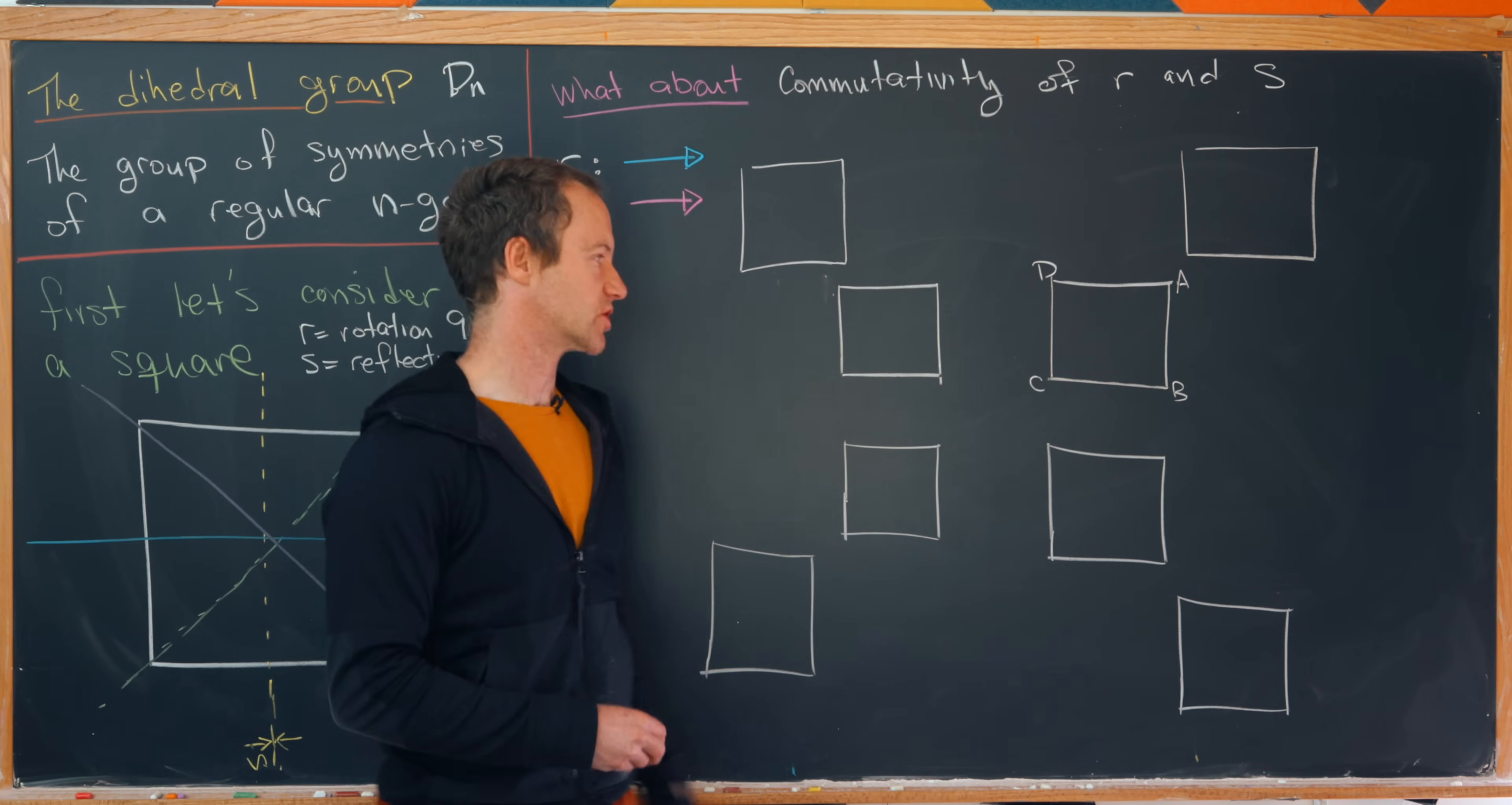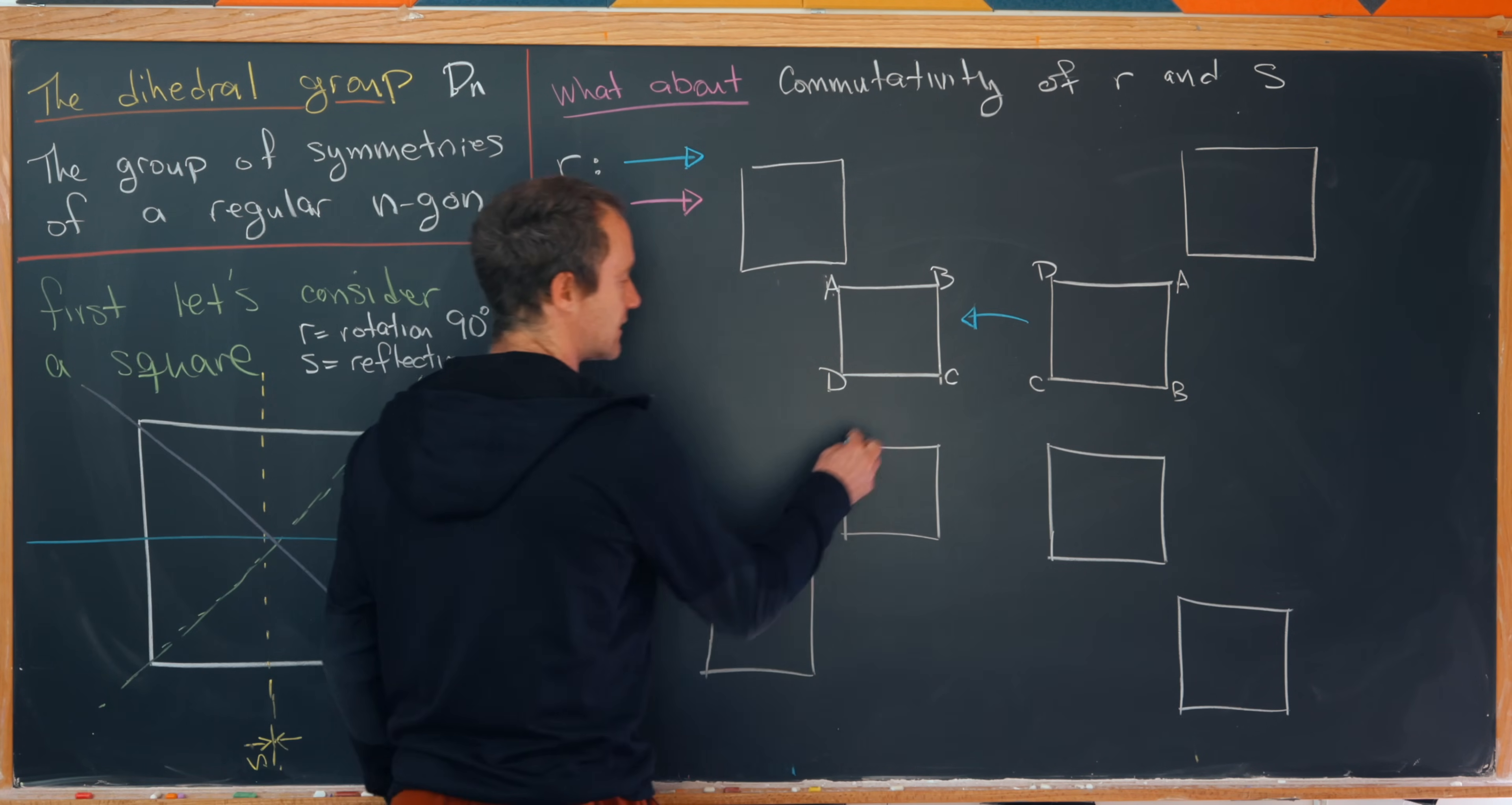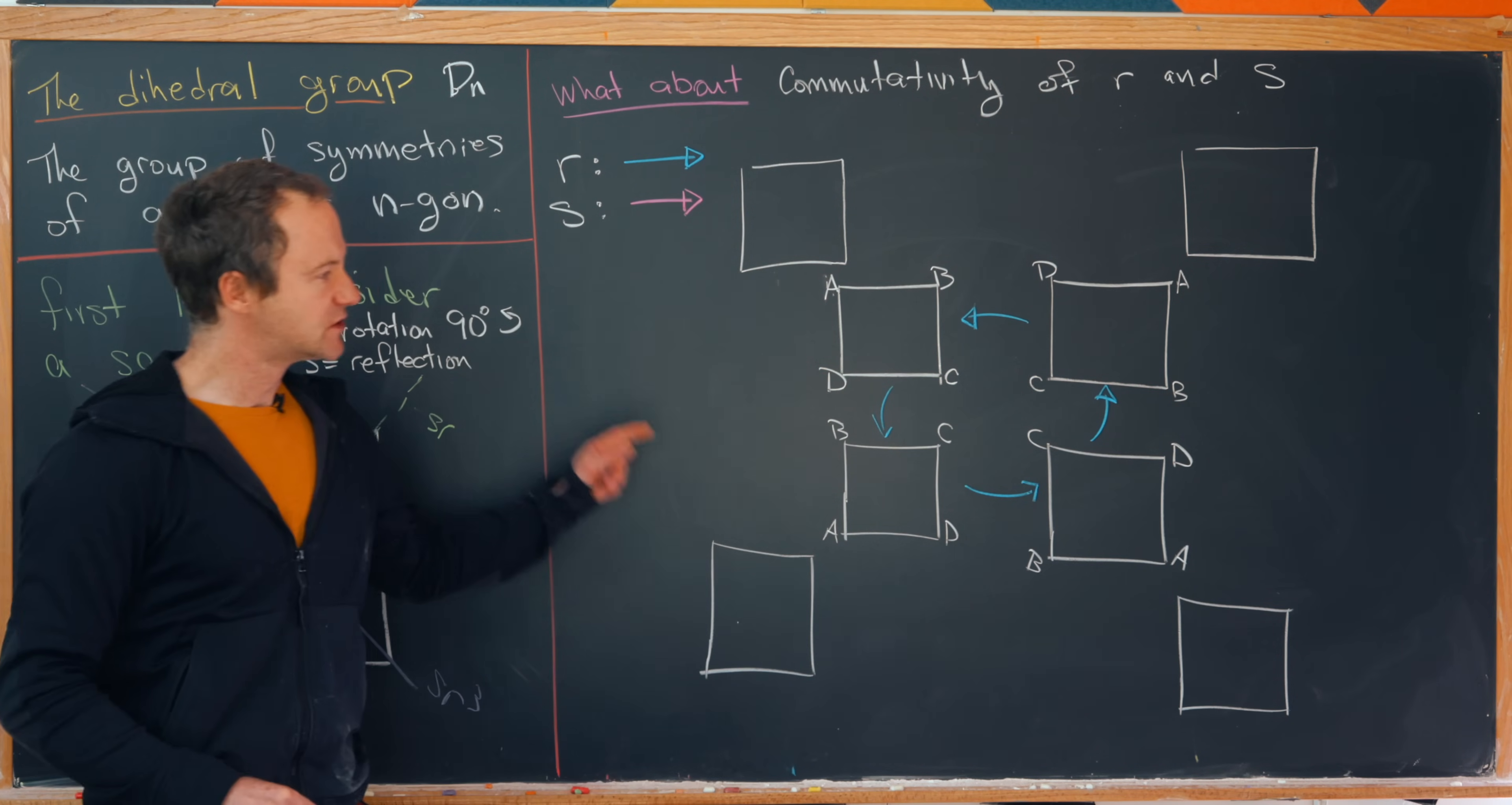So I've started with my starter square here. And now let's apply r. So if we apply r, that is rotation 90 degrees counterclockwise. That'll put the a here and then we'll have b, c, d. So rotation counterclockwise. And then let's apply r again. And what will that do? That'll move my a here and then we'll have b, c, d. Then we'll apply r again and that'll move my a here and then we'll have b, c, d.